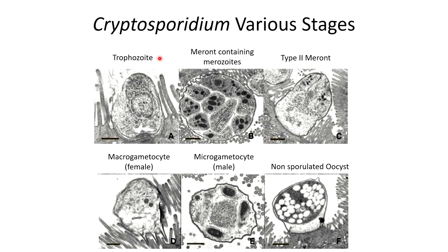Here are images showing the different Cryptosporidium stages. We have the trophozoite attached to the epithelial cell; the meront containing the merozoites, which is the asexual form of reproduction; the type II meront, which will differentiate into female or male gametocytes; the macrogametocyte (female); the microgametocyte (male); and the non-sporulated oocyst, which will likely just release more sporozoites, resulting in auto-infection of the host.